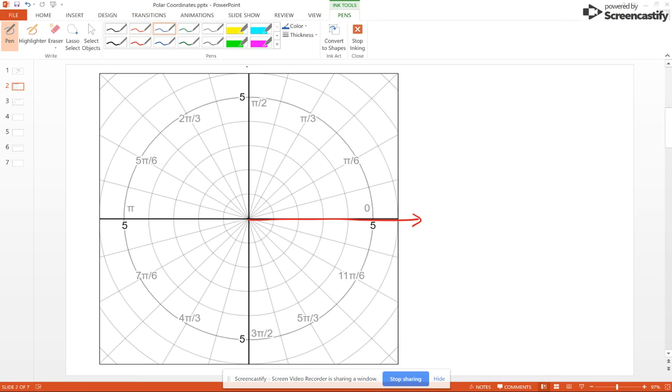Now if we have a point say A of 2, 4π over 3, this means r is 2 and our theta is 4π over 3. So we're going to go to our second circle of radius 2 here, go around to 4π over 3 and place our point A.